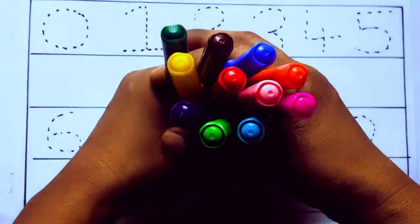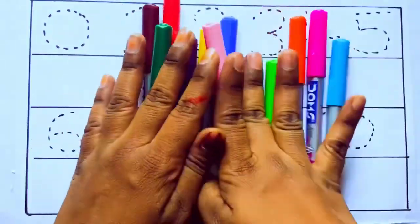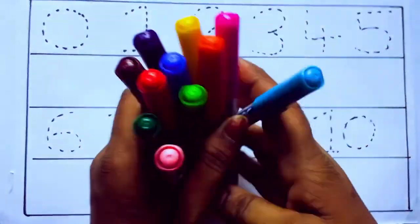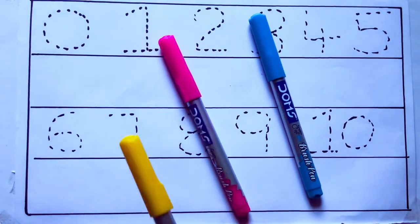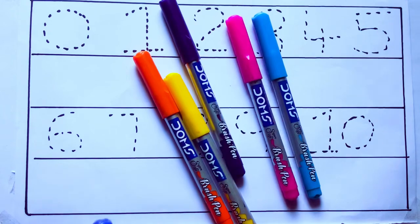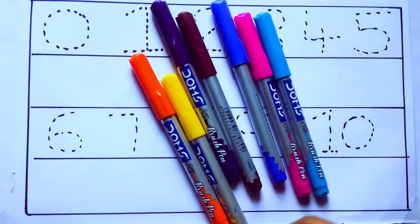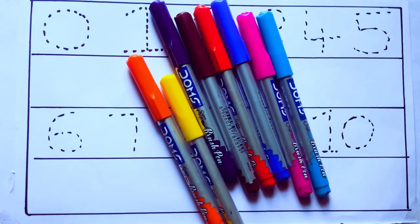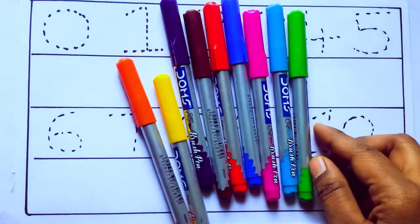Let's learn some colors. These are all the color pencils. Let's learn the names: sky blue color, pink color, yellow color, orange color, violet color, blue color, brown color, red color, green color.